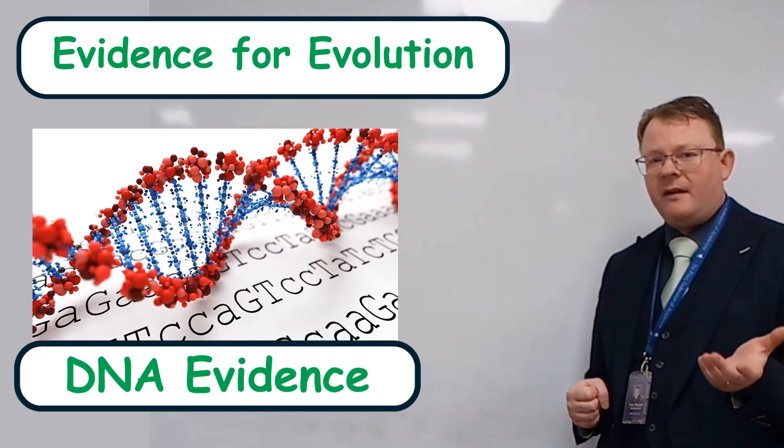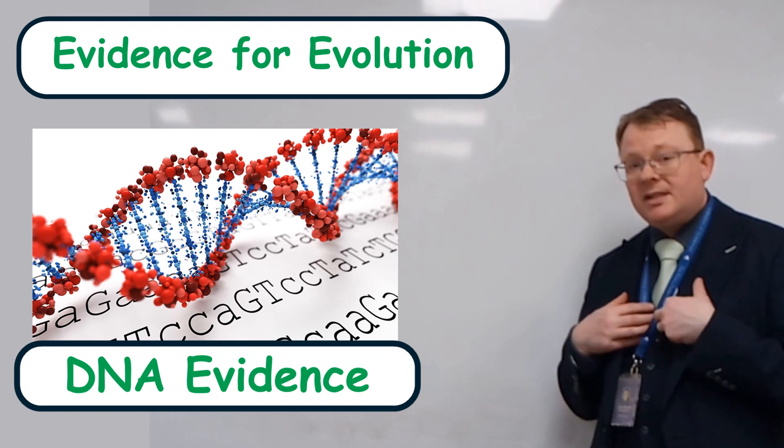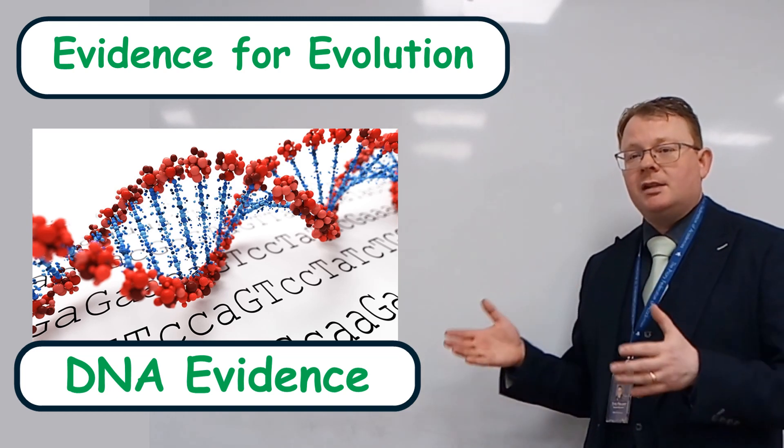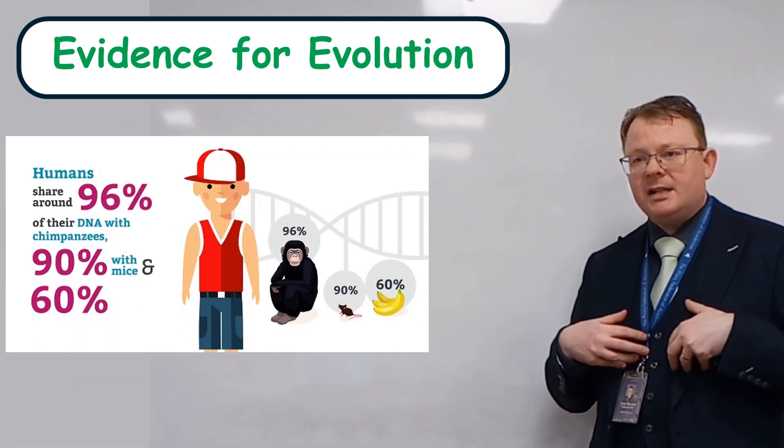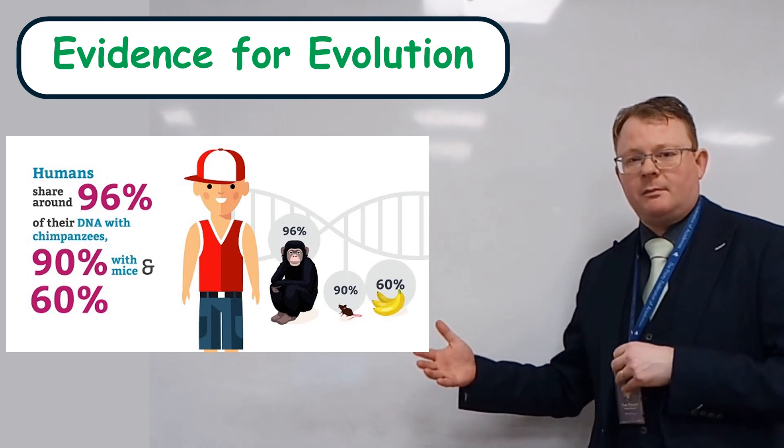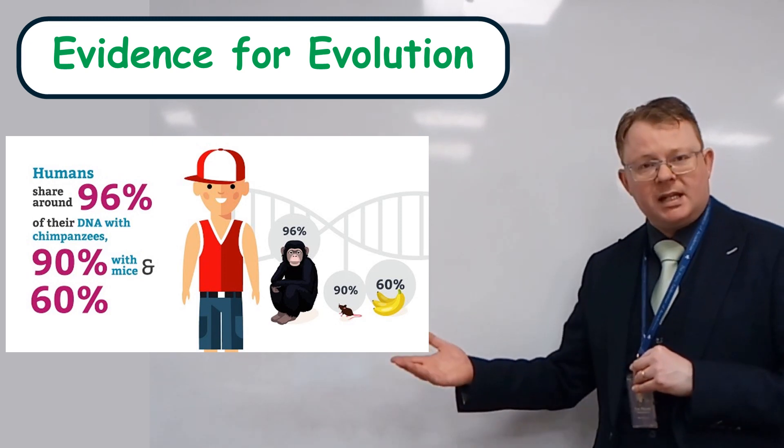Other pieces of evidence of evolution, we can look at DNA evidence now. So we can see that, for instance, our DNA is very similar to chimpanzees' DNA, suggesting that we have a common ancestor.